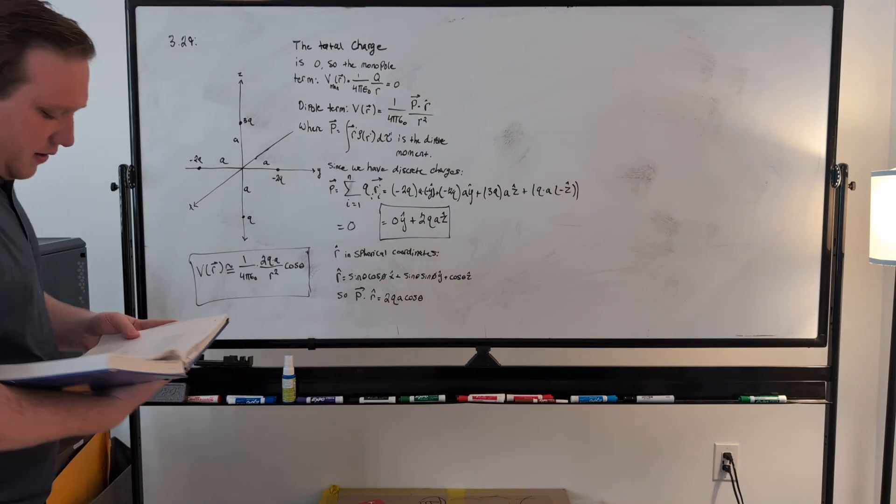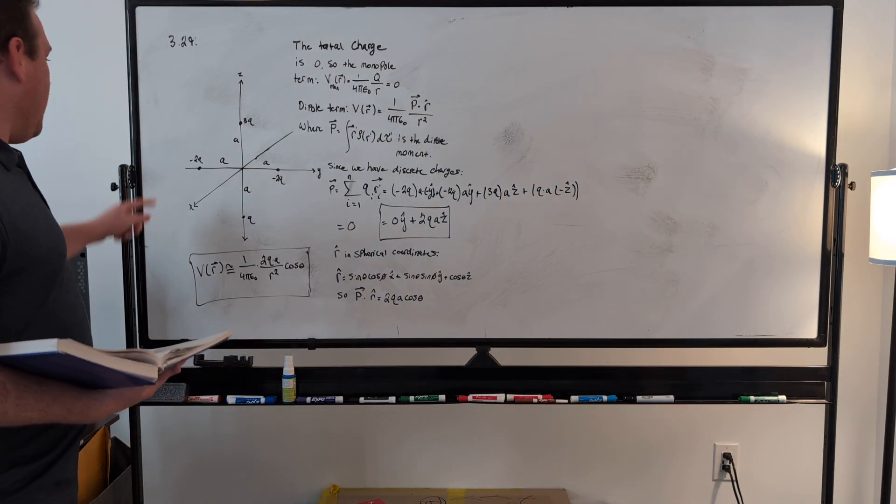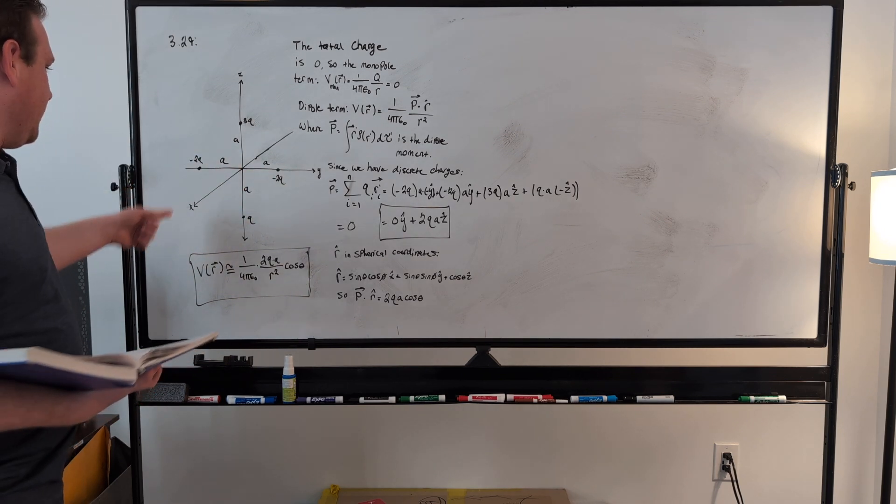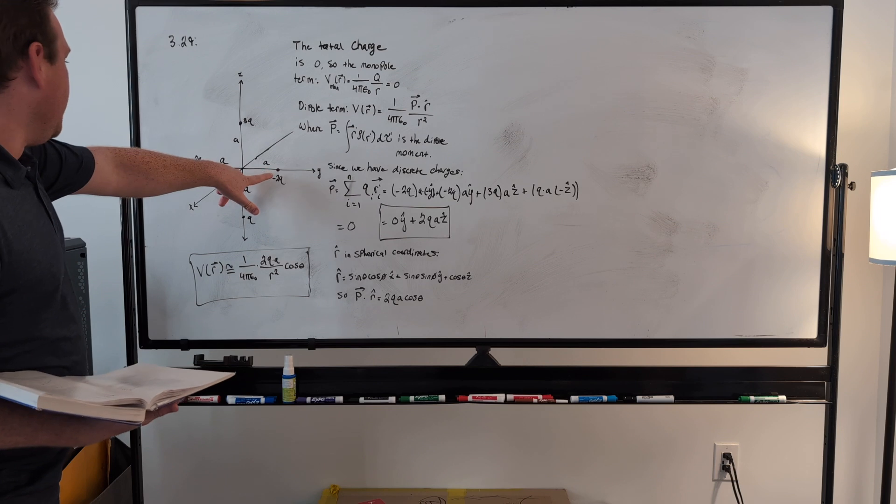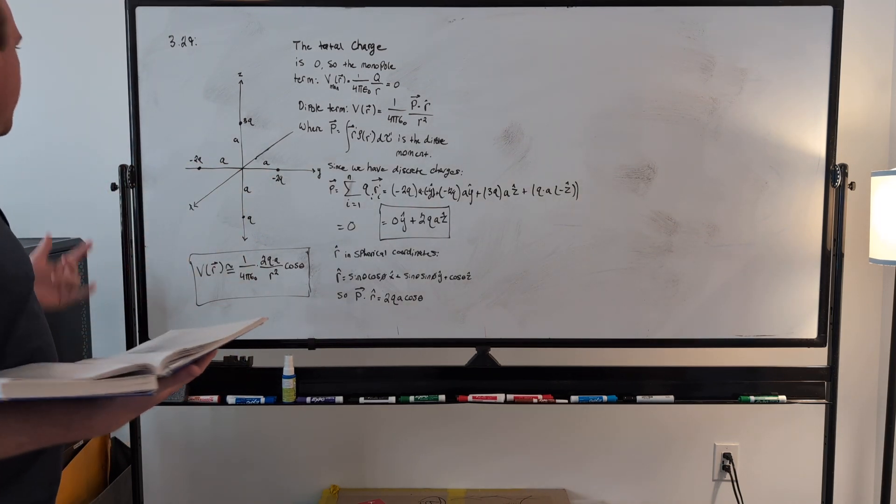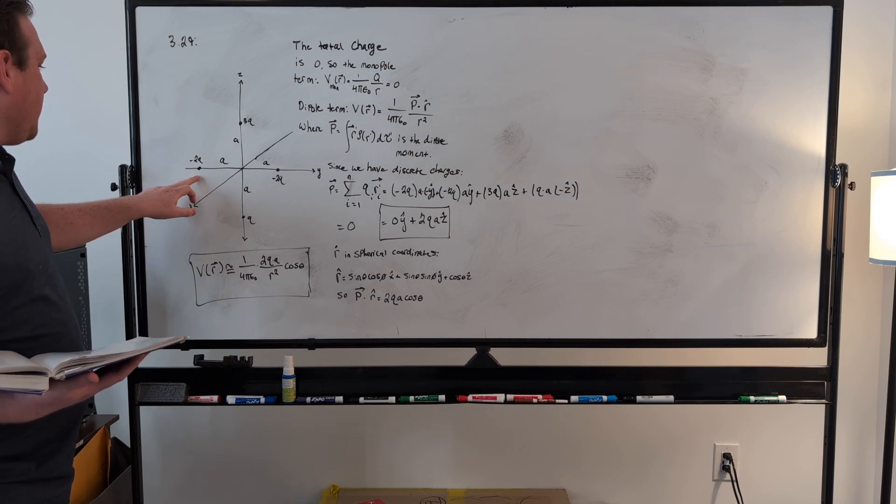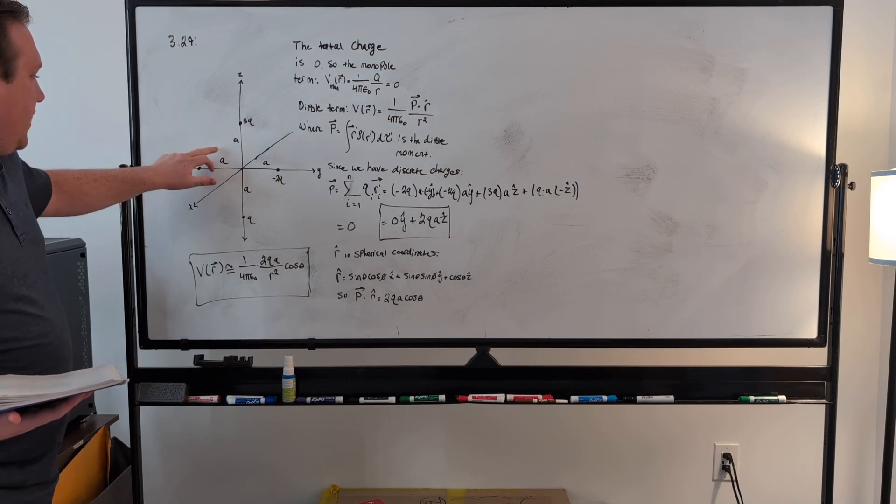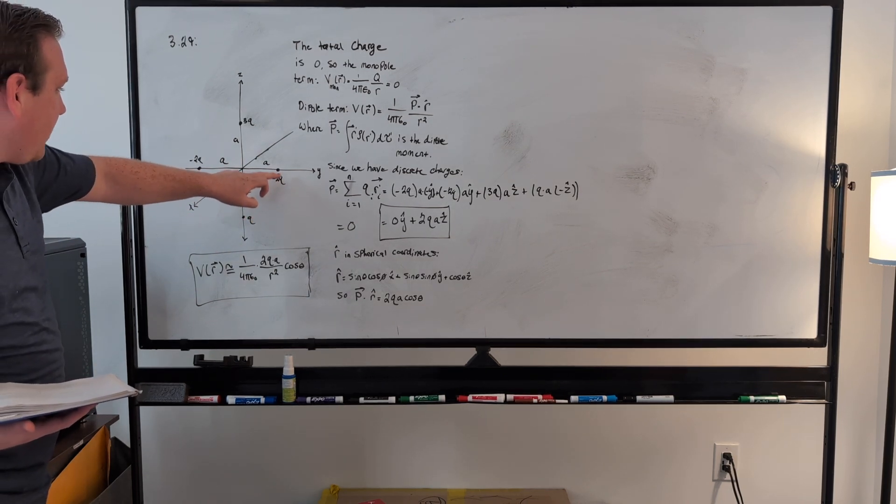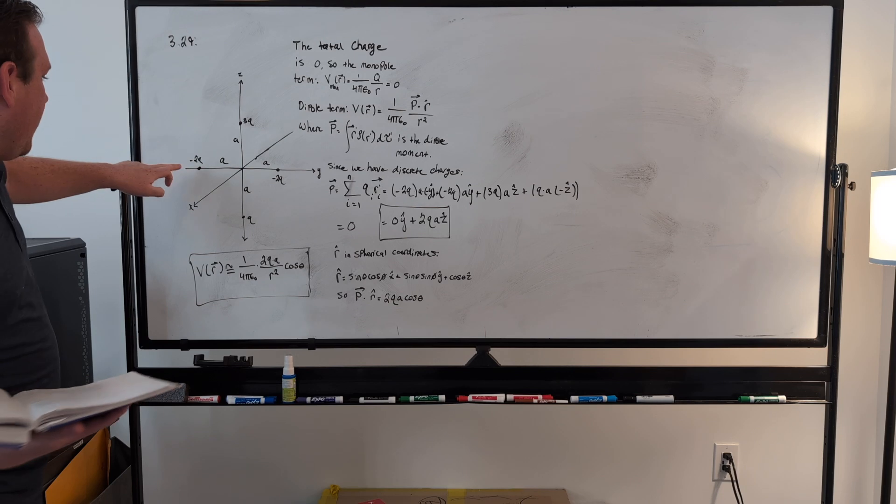This problem states that we have four charges placed as you see here. We have two charges with a charge of minus 2q, where 2q is just some unit of charge, and they're a distance a away. This one's on the minus y axis, this one's on the y axis, so they're just a distance a on that axis.